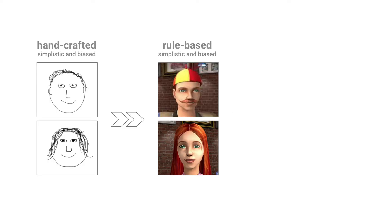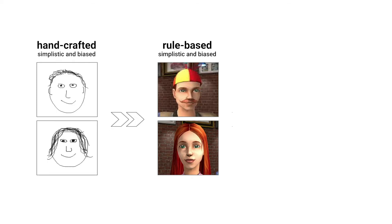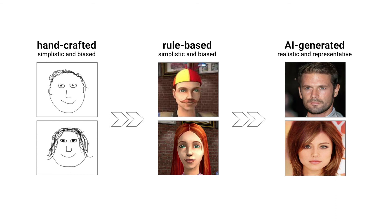What you do find on the market is rule-based synthetic data. The difference compared to AI-generated synthetic data is that you simply use machines to encode your understanding of how a human face looks, getting synthetic faces created more time-efficiently — but not necessarily better or more accurately than drawing them yourself, because it's always limited to your own understanding.